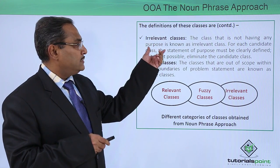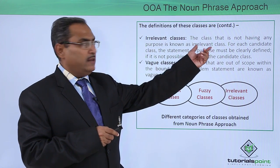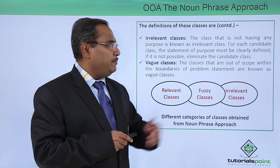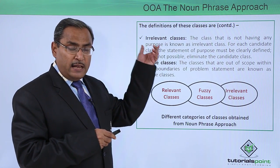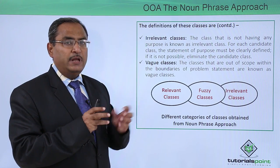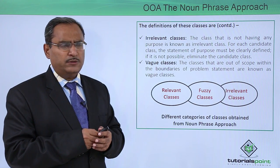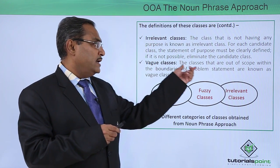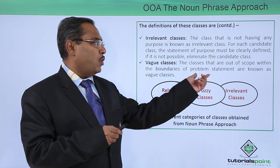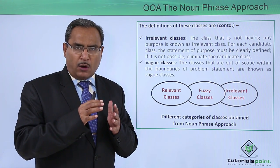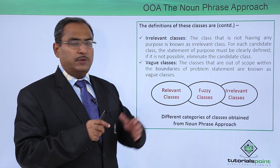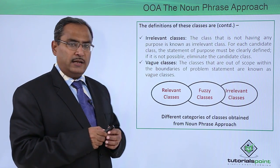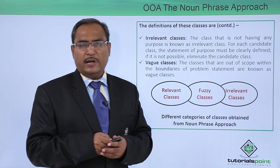Irrelevant classes: a class that does not have any purpose is known as an irrelevant class. For each candidate class, the statement of purpose must be clearly defined, and if it is not possible, eliminate the candidate class. Some nouns found in the problem statement may not be very much related to the system — those classes should not be formed because they are irrelevant. Vague classes are those out of scope within the boundaries of the problem statement — those are not to be constructed because they are vague classes. So we have relevant classes, fuzzy classes, and irrelevant classes.